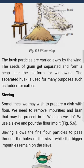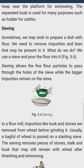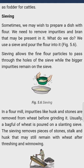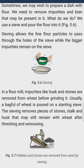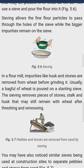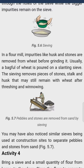Page 38 — Sieving. Sometimes we may wish to prepare a dish with flour. We need to remove impurities and bran that may be present in it. We use a sieve and pour the flour into it. Sieving allows the fine flour particles to pass through the holes of the sieve while the bigger impurities remain on the sieve. In a flour mill, impurities like husk and stones are removed from wheat before grinding it. Usually, a bag full of wheat is poured on a slanting sieve. The sieving removes pieces of stone, stalk, and husk that may still remain with wheat after threshing and winnowing. Similar sieves are also used at construction sites to separate pebbles and stones from sand.